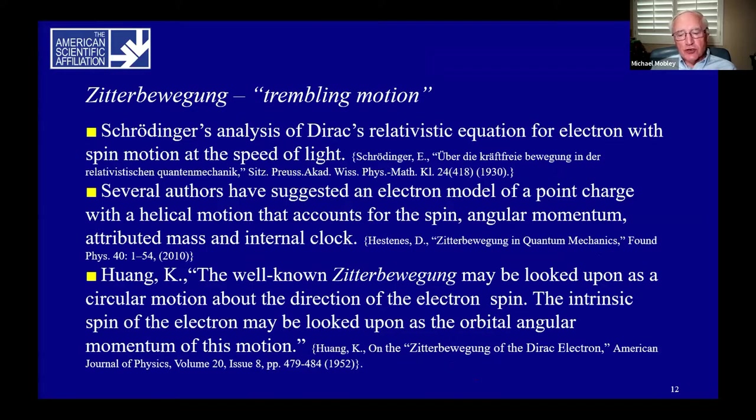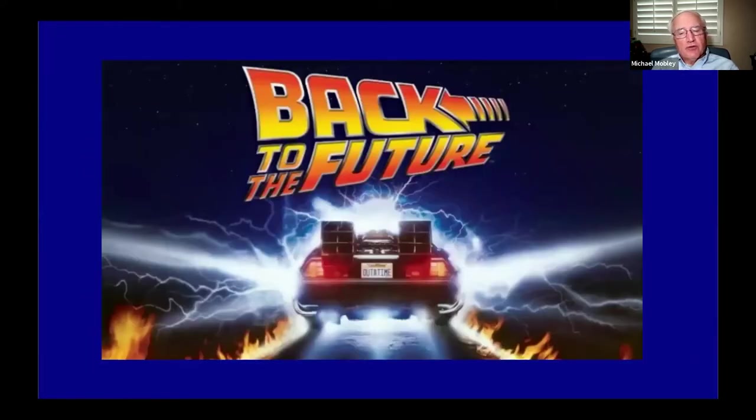Schrodinger's analysis of Dirac's relativistic equation for the electron identified a spin motion of the electron at the speed of light. Since then, several authors have suggested an electron model of a point charge with a helical motion that accounts for the spin, angular momentum, and attributed mass and internal clock of the electron. For example, in 1952, Wang stated, the well-known zitterbewegung may be looked upon as a circular motion about the direction of the electron spin. The intrinsic spin of the electron may be looked upon as the orbital angular momentum of this motion.